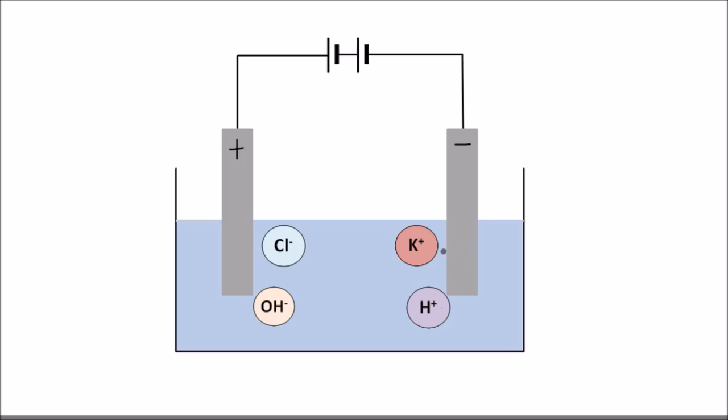At the cathode, we have two positive ions - the potassium ion and the hydrogen ion - which are both positive and both could be produced at the cathode. At the anode, we have the Cl- and the OH-, which could be produced at the anode. So which one is produced?